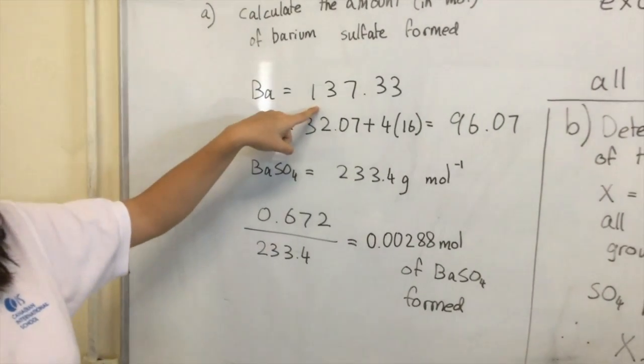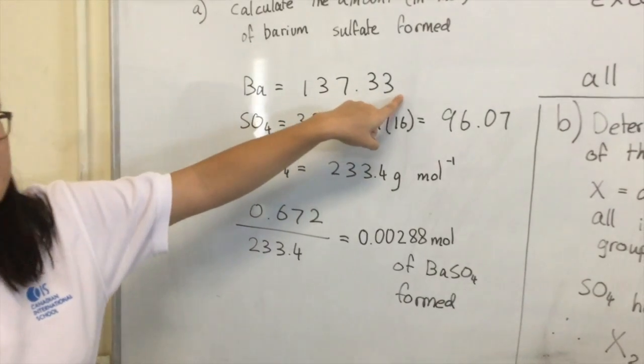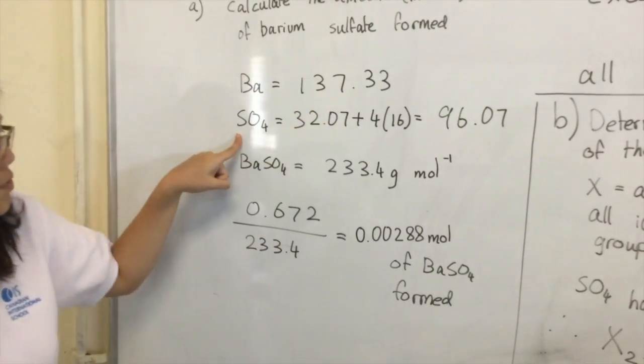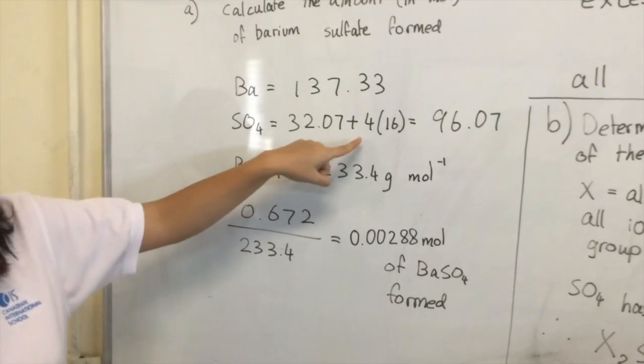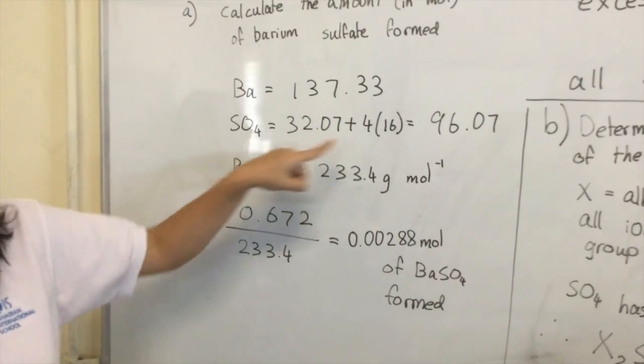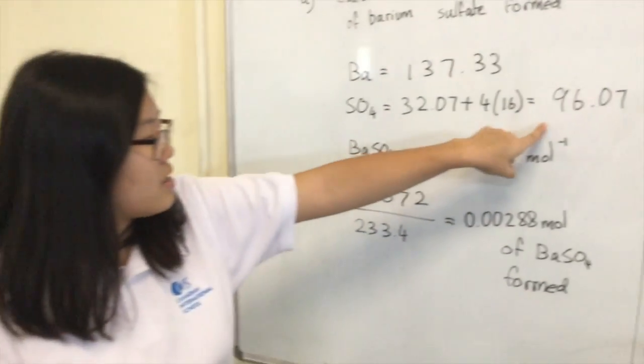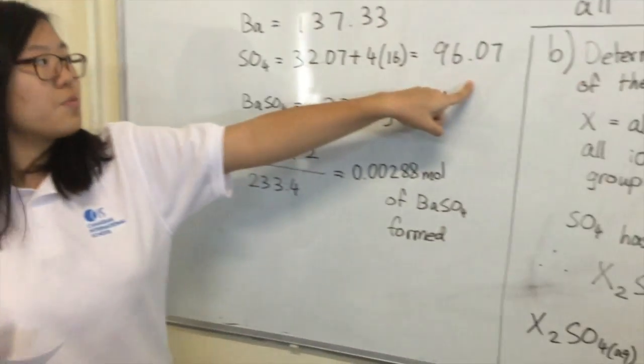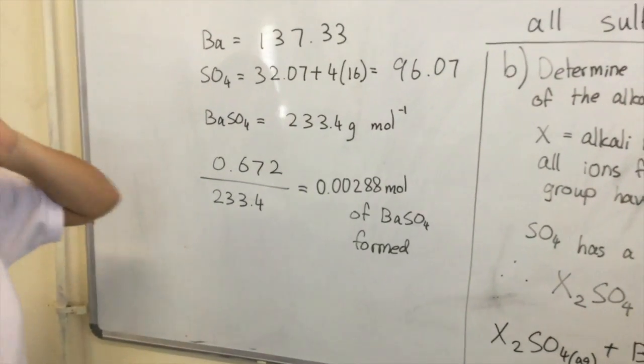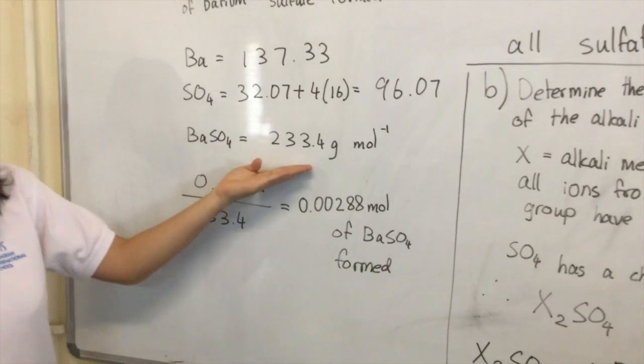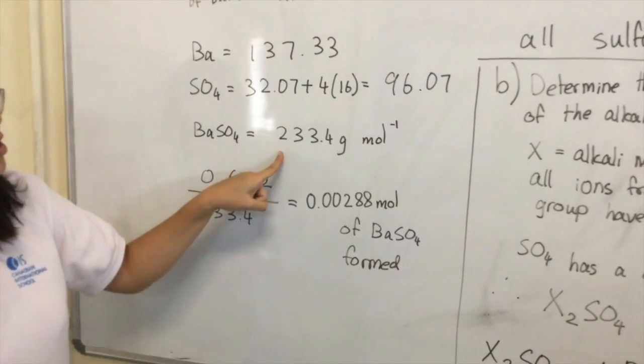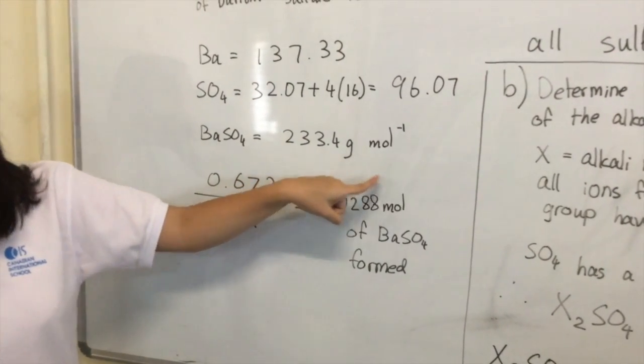Barium is 137.33 grams per mole. SO4 is 32.07, which is sulfur, and then 4 times oxygen, 16. So they add up to 96.07 grams per mole. The molar mass of barium sulfate is the sum of the two, which is 233.4 grams per mole.